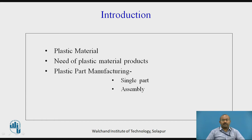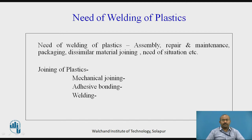Whenever plastic part manufacturing is to be considered, it is going to be produced either as a single part, single product, or it can be considered after joining distinct raw material plastic elements or produced plastic elements. The need of welding of plastics: every individual part produced by different means may be required to be connected and joined together so that a useful product will be there. Summarizing, the need of welding of plastic is for assembly, repair and maintenance, packaging, dissimilar material joining processes, and to fulfill the need of the situation.